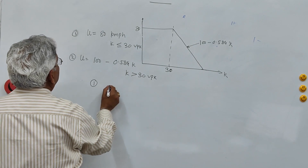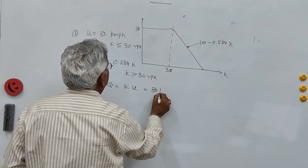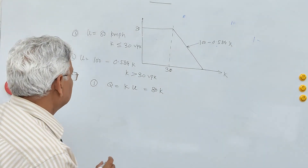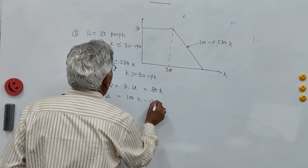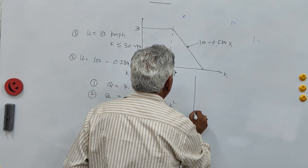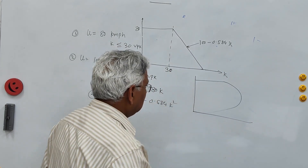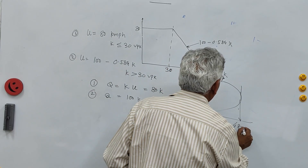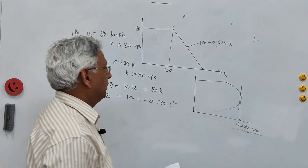If you make a plot of speed versus flow: for part one, q = 80k (a straight line for k from 0 to 30 vehicles per km); for part two, q = 100k − 0.584k² (the Greenshield-form equation). The plot is a straight line that then curves, and the peak of the curve gives the capacity — approximately 4,280 vehicles per hour.